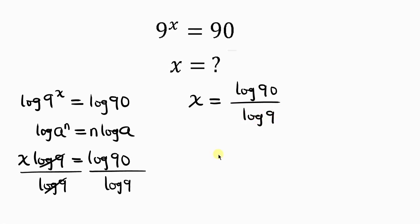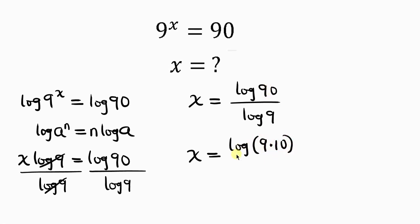Our next step would be to split 90. 90 is the same as 9 times 10. So we have x equal to the log of 9 times 10, which gives 90, all over log 9.